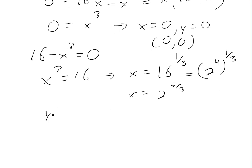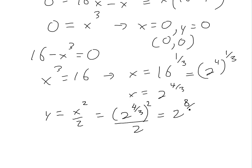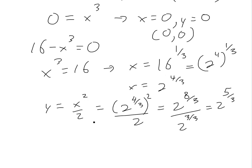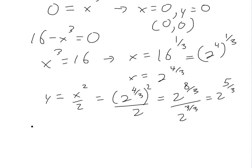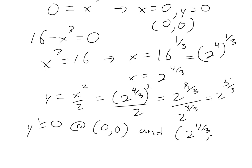Now we know y equals x squared over 2. When x equals 0, y equals 0 — so one point is (0, 0). For the second point, x equals 2 to the 4 over 3, so y equals (2 to the 4 over 3) squared divided by 2, which equals 2 to the 8 over 3 divided by 2 to the 1, giving us 2 to the 5 over 3. So the tangent line is horizontal at (0, 0) and at the point (2 to the 4/3, 2 to the 5/3). That's the answer for part c.